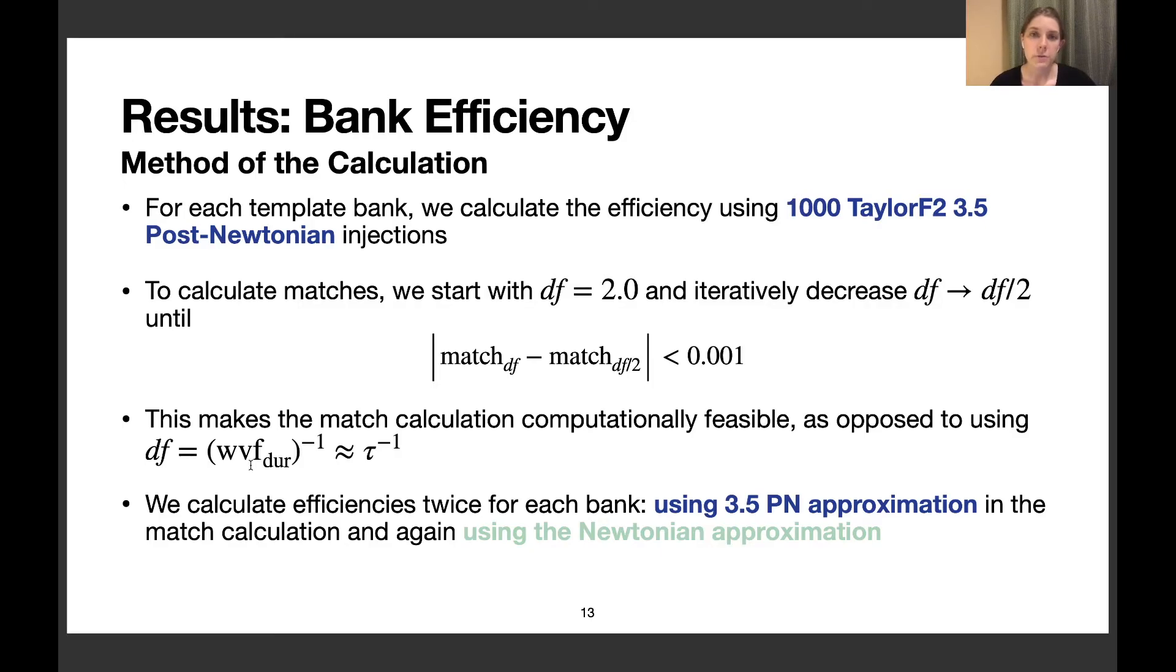The typical value of df, which is inverse waveform duration or about 1 over the Newtonian chirp time, would be way too small for these very long, slowly inspiraling LISA signals. Using this method makes the computation easier.